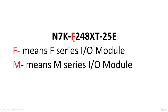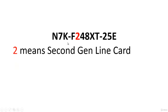The second character, F, means F-series input/output module. If it was M, it would be an M-series module. Initially, F modules had only Layer 2 functionality, and M had Layer 2 plus Layer 3. But nowadays we have F3 which is capable of routing as well. The number 2 means it's a second-generation card — F1 would be first generation, F3 would be third generation.